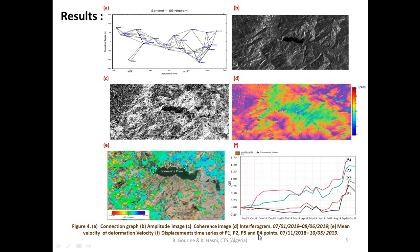Results are also presented in terms of mean velocity of deformation and displacement time series of some characteristic points: P1, P2, P3, and P4. The results show that the mean velocity of deformation for the dam region is around 1 cm per year. The displacement of the most studied points on the dyke of the dam — P1 and P2 — and upstream reservoir sites — P3 and P4 — show two trends.